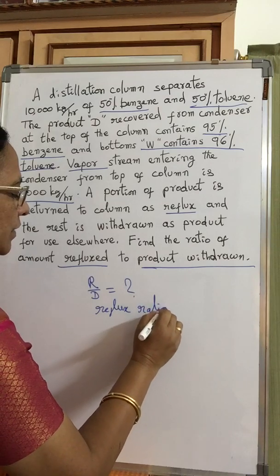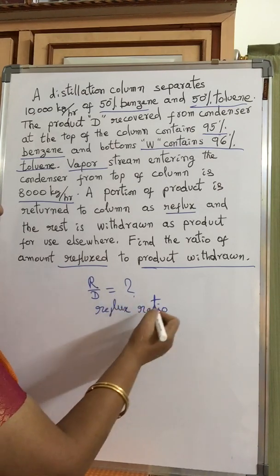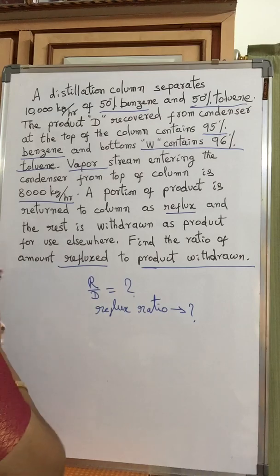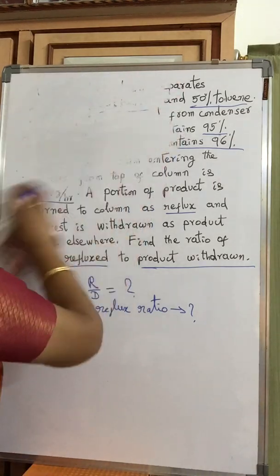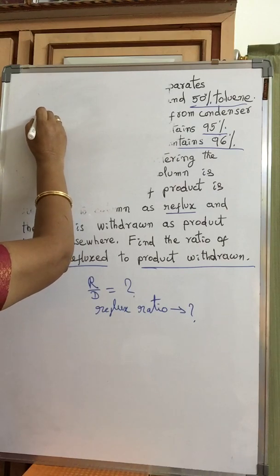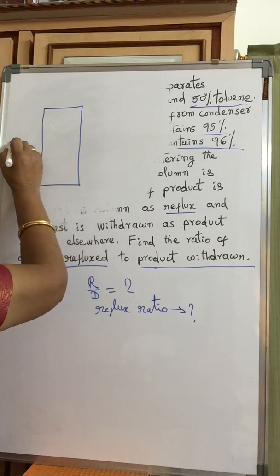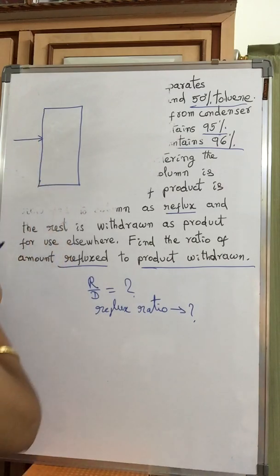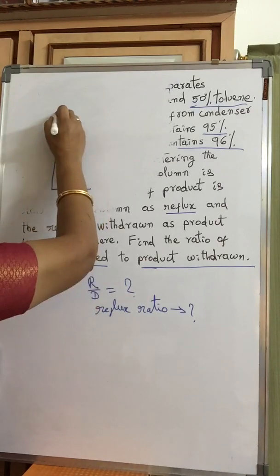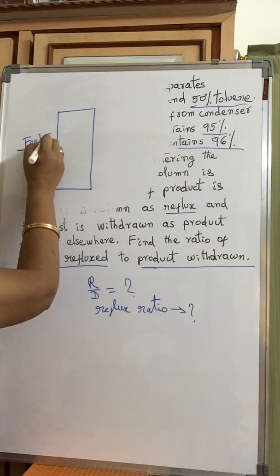In previous lectures, we learned how to calculate W, D, R, and related quantities. Now we will calculate the reflux ratio. First, we shall draw the diagram of the distillation column.